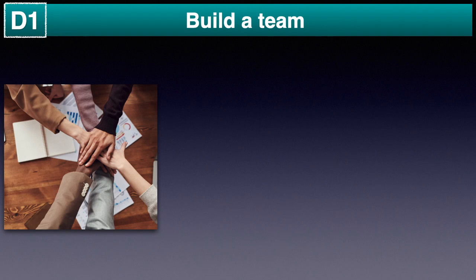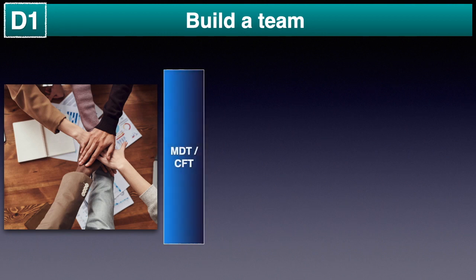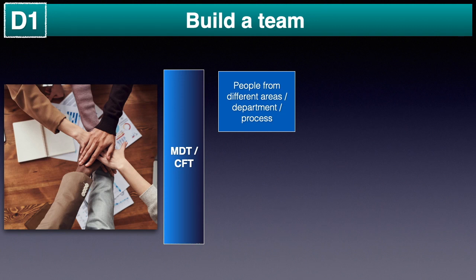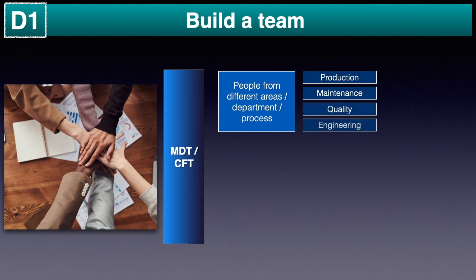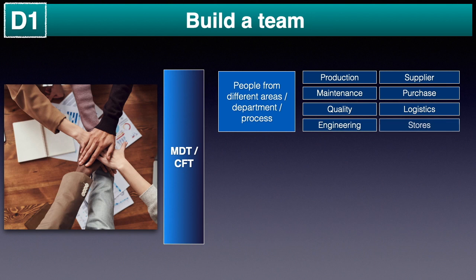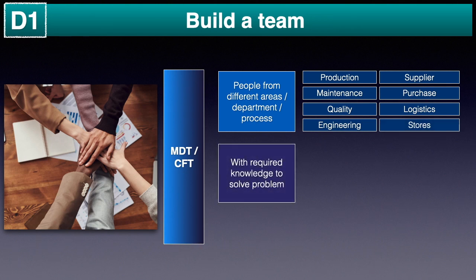D1: This stage is for team formation. It's not possible to solve a problem effectively without a good team. To solve the problem properly, the team needs to be multidisciplinary or cross-functional, which means people from various departments or areas are to be included — such as but not limited to production, maintenance, quality, engineering, supplier, purchase, logistics, and stores.